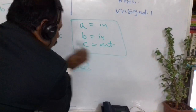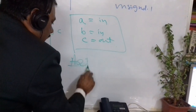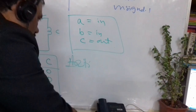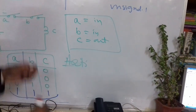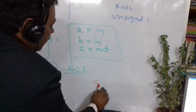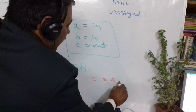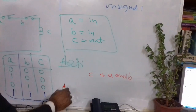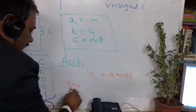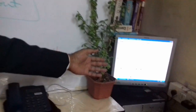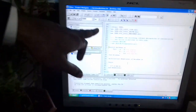In the architecture, you write: C is assigned as A AND B, and then END. This is a very simple program. Let us now look at the actual software.